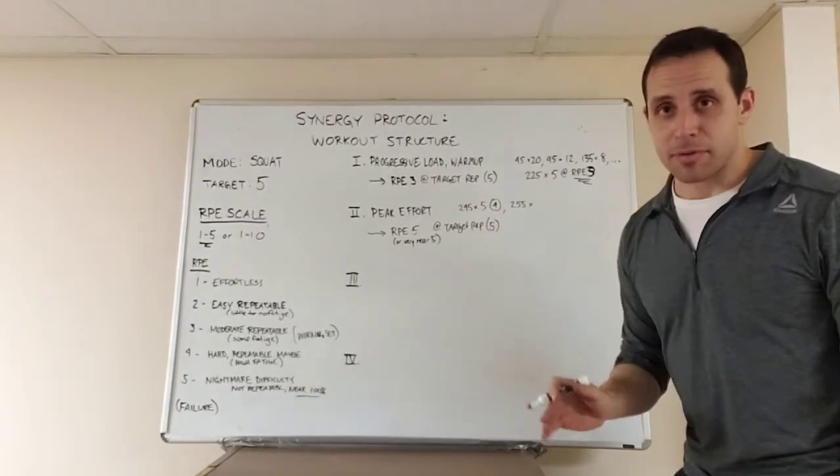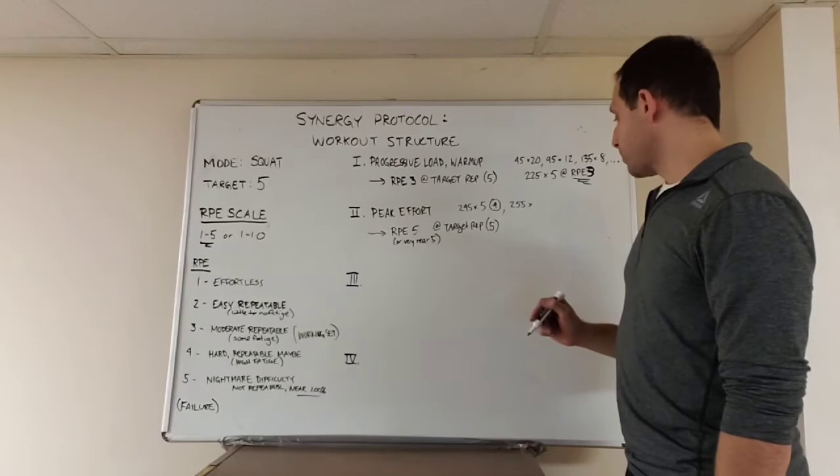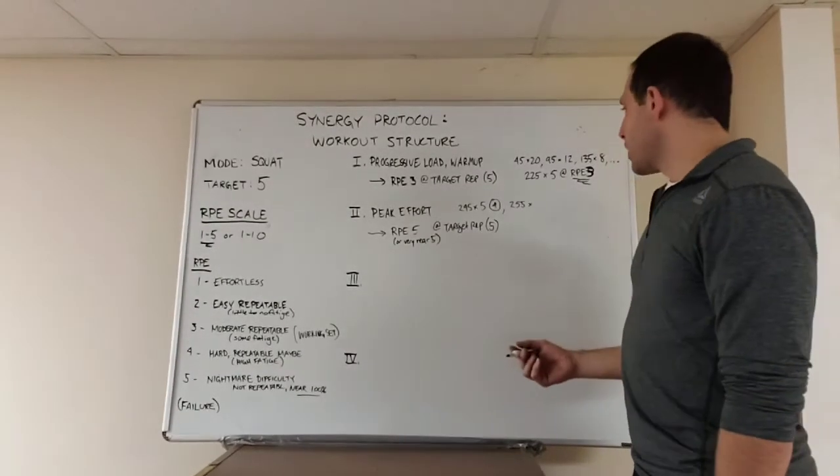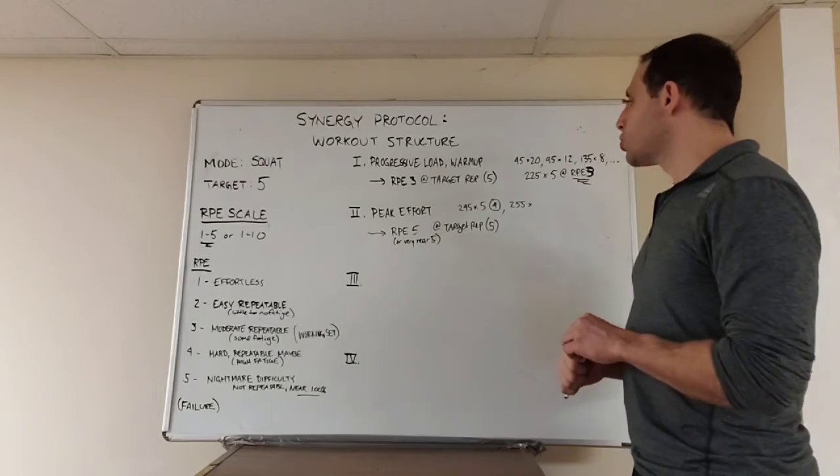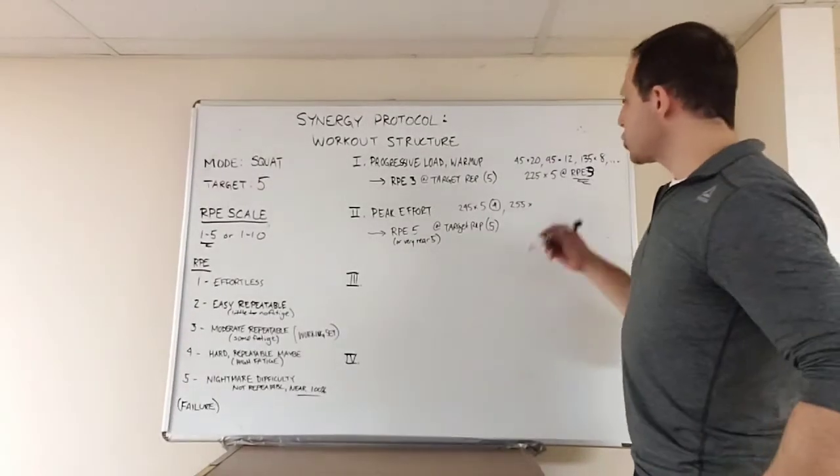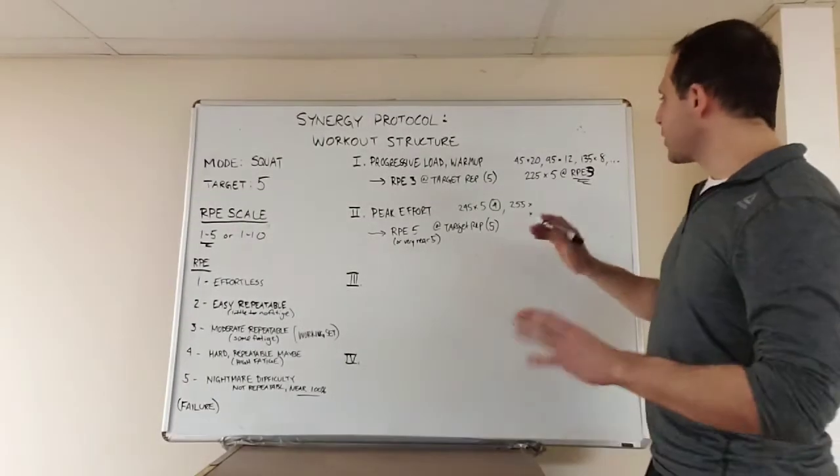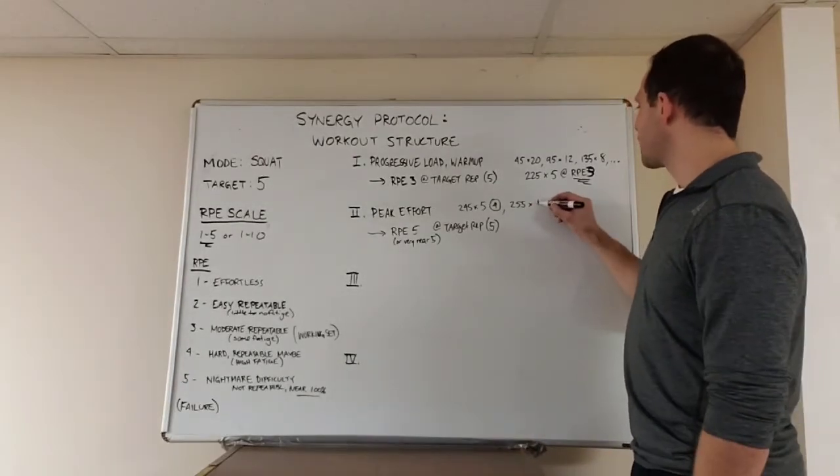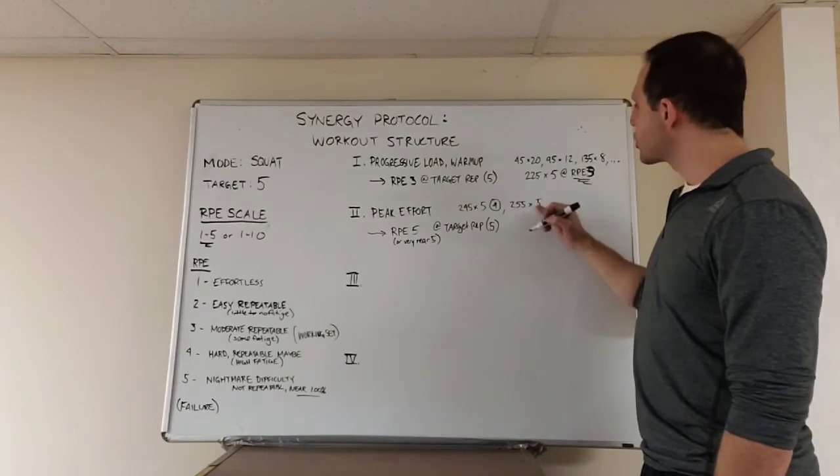Something might happen. In which case, you are going to make an estimate. Let's, for now, just say everything went smoothly. He does this. 255. And guess what? It's a 5. Great. Now he's going to move on. And he's going to use this number to calculate the weight for the next phase. Which we'll get into in a second.